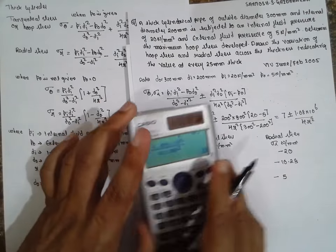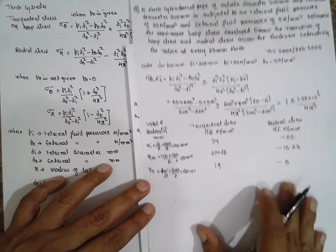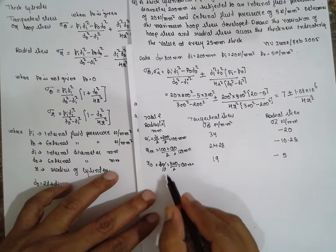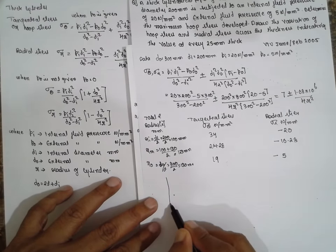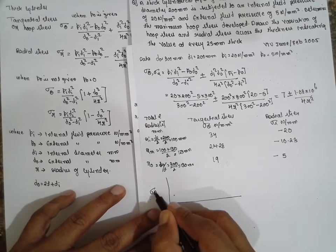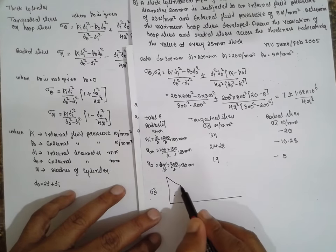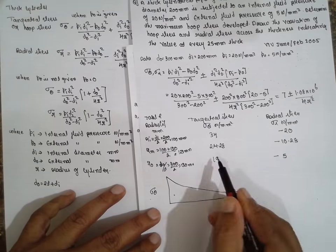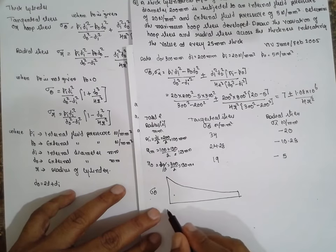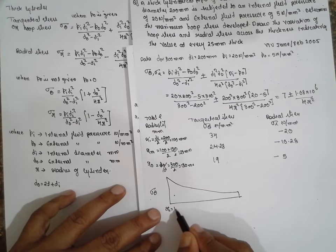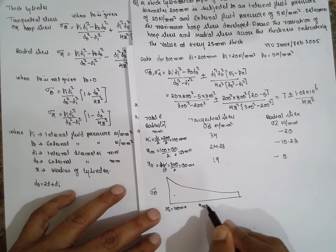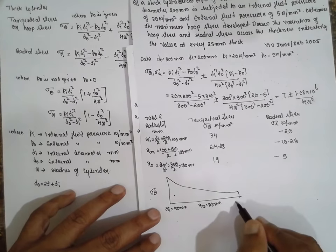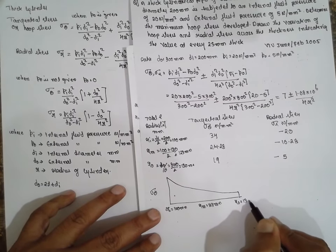Now draw the diagram after getting this value. First I will go for tangential stress sigma theta. In this way it obtained, but there is a value at the end. Sigma Rᵢ 100 mm, Sigma Rₘ 125 mm, Sigma R₀ 150 mm.